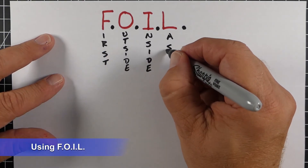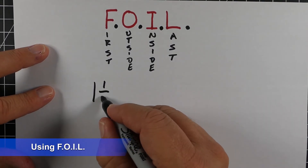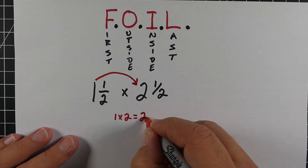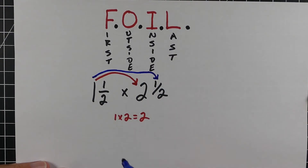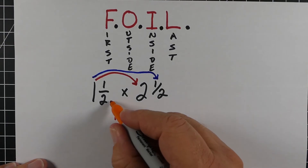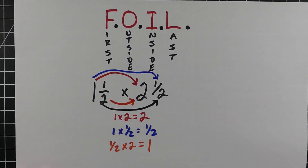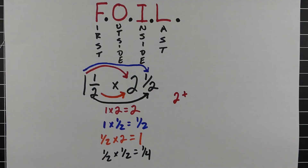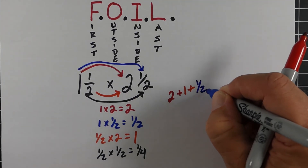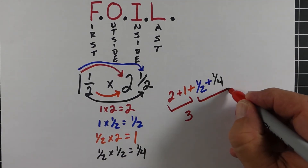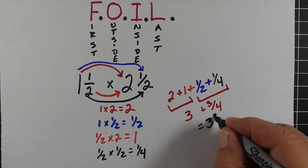The other method is like using the FOIL method — first, outside, inside, and last. Looking at one and one-half times two and one-half: first, multiply the whole numbers — one times two is two. Outside: one times one-half is one-half. Inside: one-half times two is one. Last: one-half times one-half is one-fourth. When we add all those up — the two and the one, the one-half, and the one-fourth — we end up with three and three-fourths.